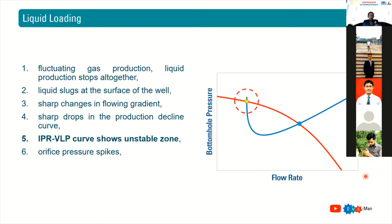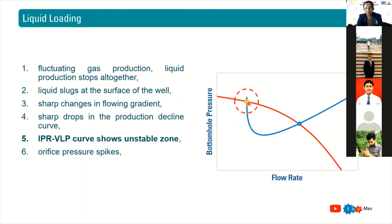Also, if you plot your IPR-VLP curves and your production operating point falls on the right-side intersection, it means you are healthy. But if the intersection is on the left part of the curve, it means your production is unstable — you are producing in an unstable zone, and most likely it is affected by the liquid loading phenomenon.